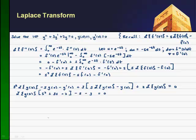Transposing the negative s minus three to the other side gives s plus three, then dividing by s squared plus three s plus two gives the Laplace transform of y of x equals s plus three all over s squared plus three s plus two. Factoring the denominator, we get s plus three all over s plus two times s plus one.